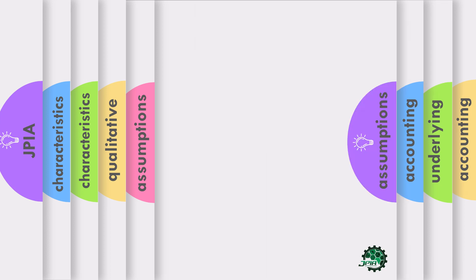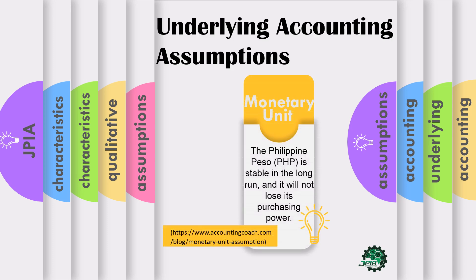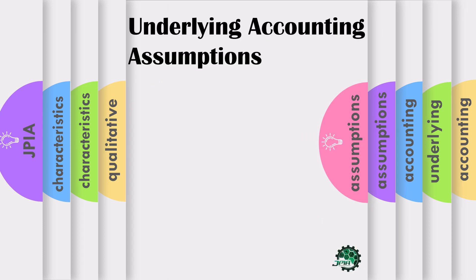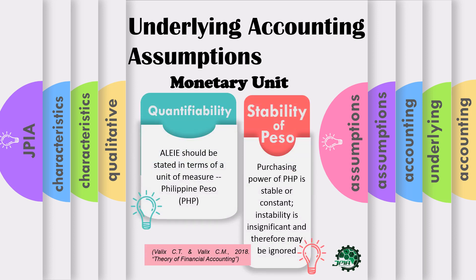For the last assumption, we have the monetary unit. The Philippine peso is a reasonable unit of measure in that its purchasing power is relatively stable. This assumption has two aspects: quantifiability and stability of peso. Quantifiability means that the assets, liabilities, equity, income, and expenses should be stated in terms of a unit of measure, which is the Philippine peso. If you're in the Philippines, the unit of measure should be in Philippine peso.